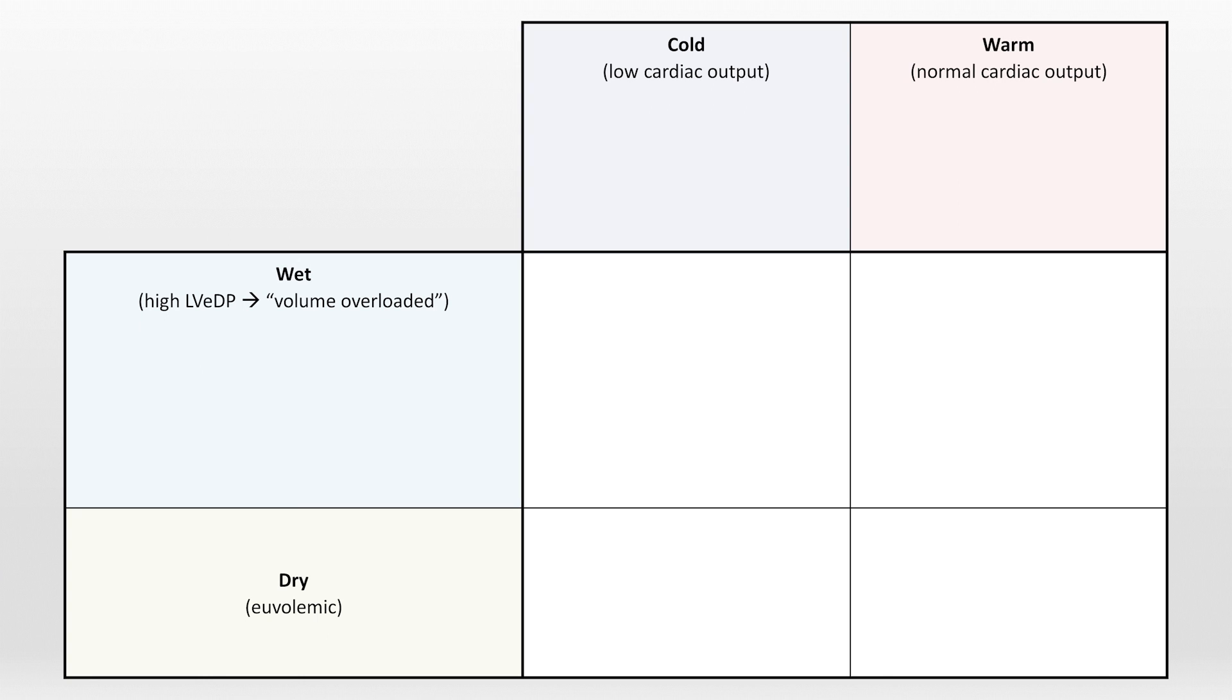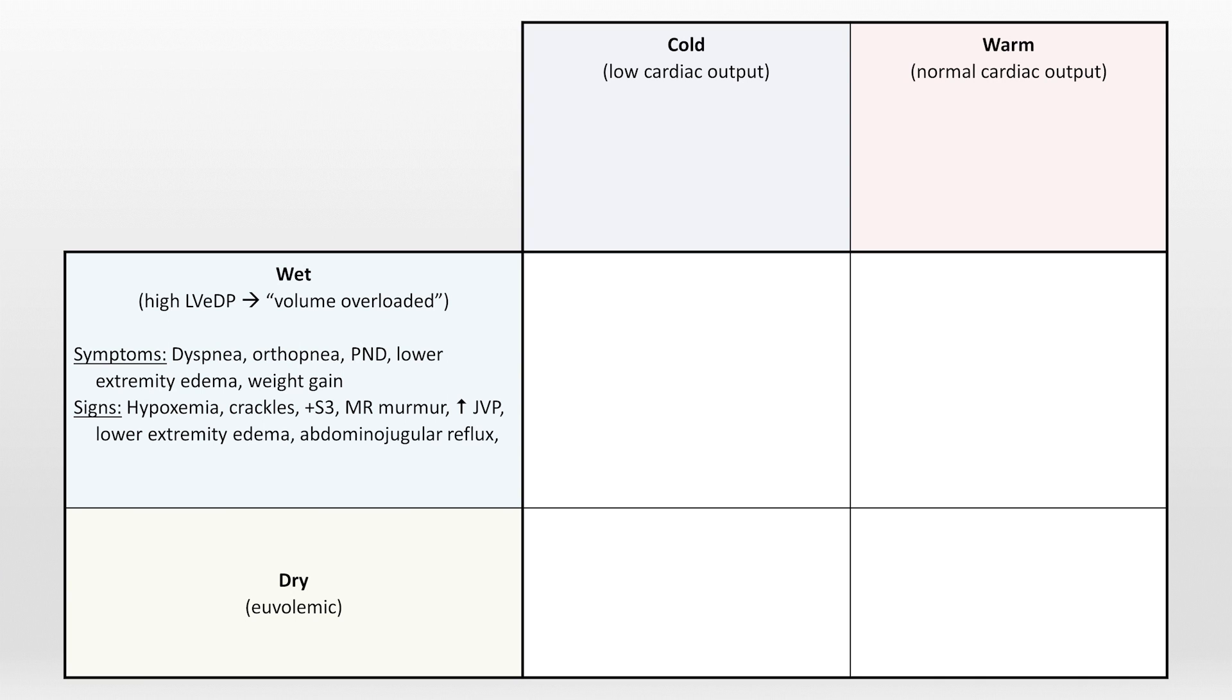The symptoms, signs, and test abnormalities observed in heart failure can be attributed to either the volume overload or the low output. Volume overload leads to the symptoms of dyspnea, orthopnea, paroxysmal nocturnal dyspnea, lower extremity edema, and weight gain. On exam, it can lead to hypoxemia, crackles, a third heart sound, the murmur of functional mitral regurgitation from stretching of the mitral annulus, elevated JVP, peripheral edema, abdominal jugular reflux, and a dilated and non-collapsing IVC on ultrasound. And overload leads to an elevated BNP.